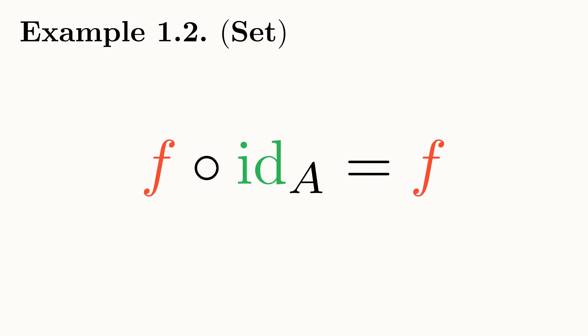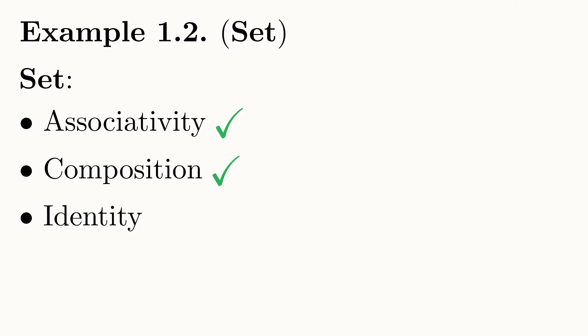Why not try to finish the proof that id is the unit of composition by showing that the function id on b follows f has exactly the same mapping as f. So we've shown that Set really is a category, which should come as no surprise considering we were introduced to the notion of a category by abstracting set theory.